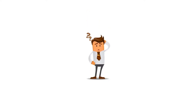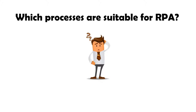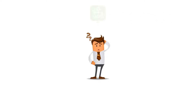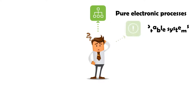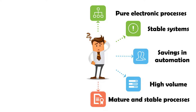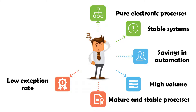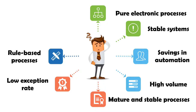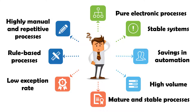Now we know what RPA is and what can be done with the RPA tools, but which processes are suitable for RPA? The most important criteria are: processes have to be in an electronic form; processes should work with stable systems like SAP; automation should generate savings; processes should have a high volume; they should be mature and stable; processes should have a low exception rate; they should be rule-based and need no human intervention. Highly manual and repetitive processes are the most suitable for RPA.